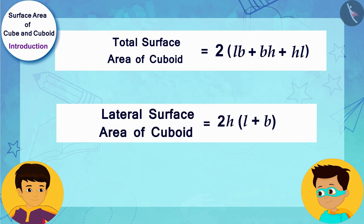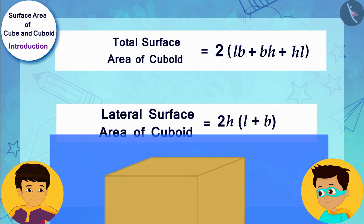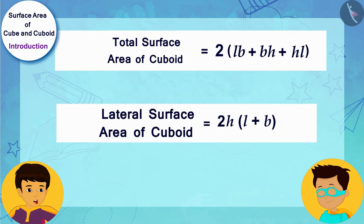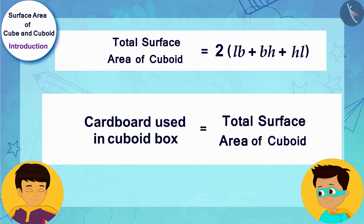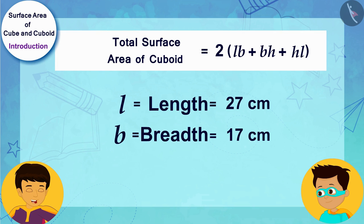In order to make the cuboid box, we will need all of its sides, so the area of the cardboard that we will require is equal to the total surface area of the cuboid. Let me solve this by writing the length 27 cm, breadth 17 cm and height 10 cm in the formula, instead of L, B and H respectively.